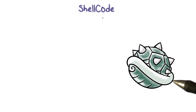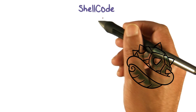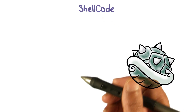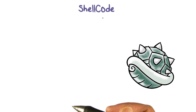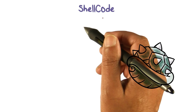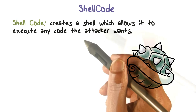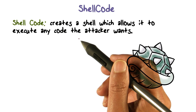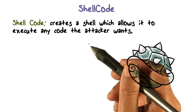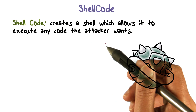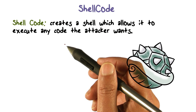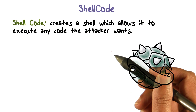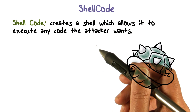The code that the attacker wants to craft is code that is going to launch a command shell. That kind of code is called shellcode. The shellcode creates a shell, which is going to allow you to execute arbitrary commands. So any code or program that we have, the attacker can ask that that particular code be executed.